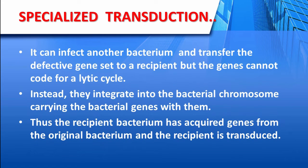The defective transducing phage can infect another bacterium and transfer the defective gene set to the recipient. These genes cannot code for a lytic cycle; instead, they integrate into the bacterial chromosome carrying the bacterial genes with them, resulting in genetic recombination.